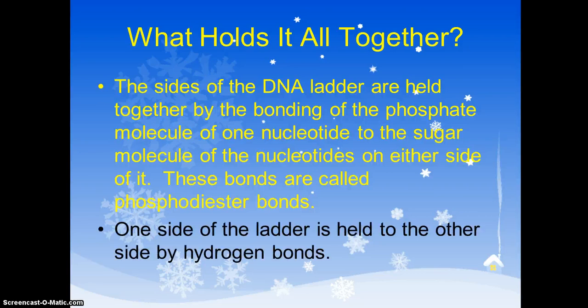And we just said this. The one side of the ladder is held together to the other side of the ladder in the middle with those hydrogen bonds. Adenine making two hydrogen bonds to a thymine. Guanine making three hydrogen bonds to a cytosine. So we have two kinds of bonds in a DNA molecule. And you have to know where they're at.